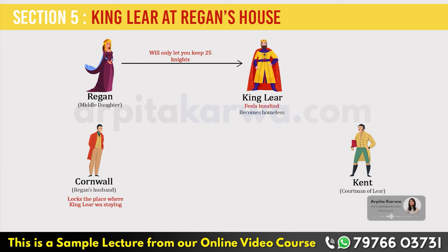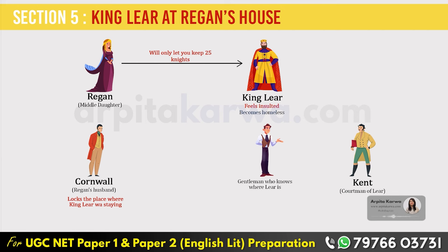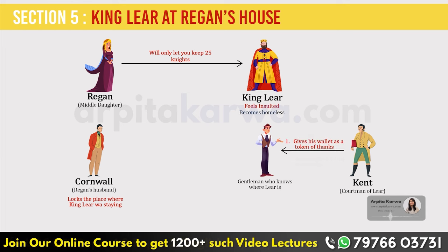While searching for Lear, Kent meets a gentleman who might have seen Lear. The gentleman tells Kent about where he saw King Lear. As a token of gratitude, Kent gives away his wallet to this gentleman and also requests the gentleman to give Kent's ring to King Lear's youngest daughter, Cordelia.